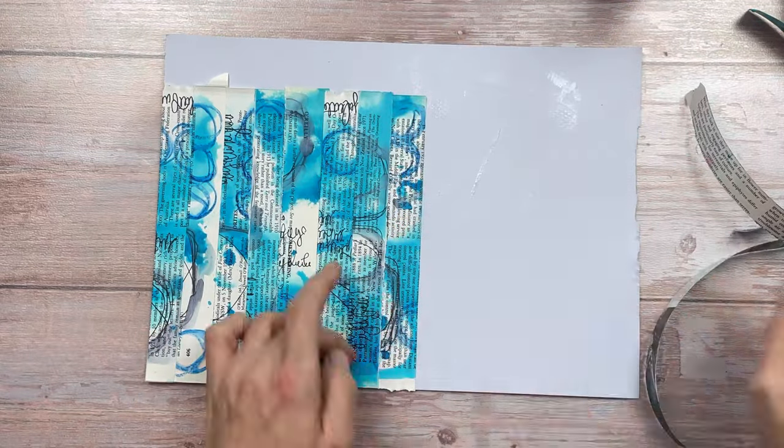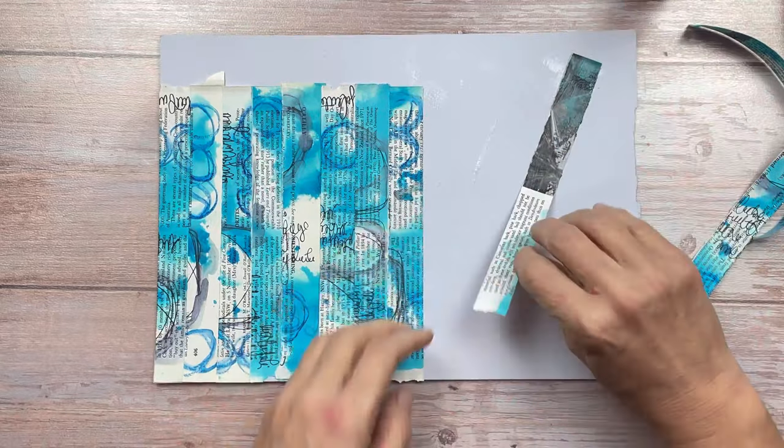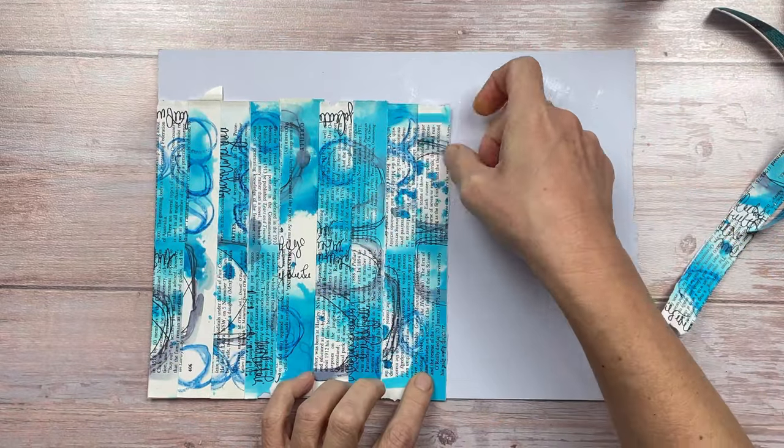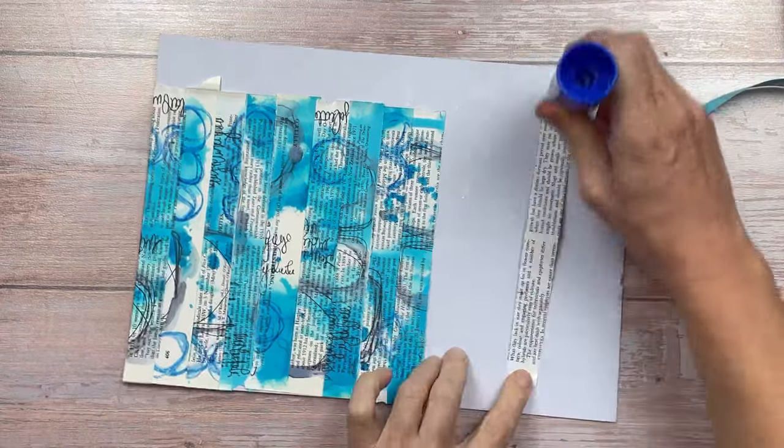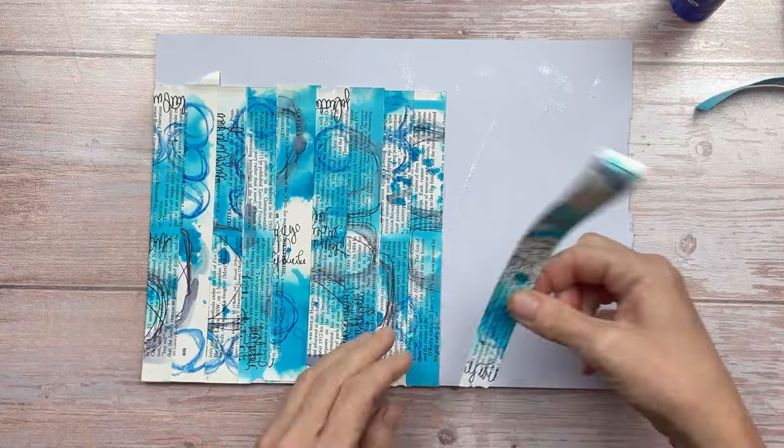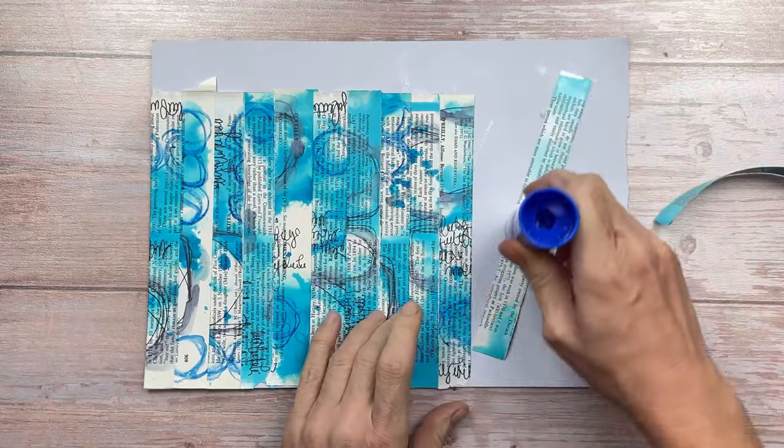You could do this with any piece of art that you've created that you're not 100% happy with. A lot of times we create stuff that is not how we envisioned it to be. We're not 100% happy. Either you can collage over it and create something again, or you could just rip it up, reassemble it in a different way and create something else.